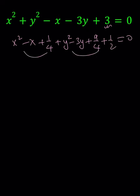So now we get two perfect squares. X minus 1 half squared plus y minus 3 halves squared. And then you could put the 1 half on the right hand side by subtracting. That's going to become negative 1 half.